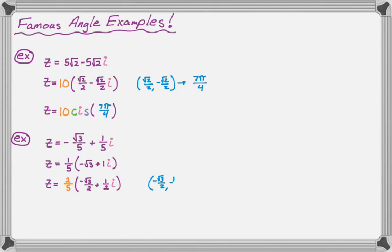So now I look for my unit circle point. Negative root three over two comma one half. I know that that is definitely five pi over six. And that means I can rewrite this. So we get two fifths cis five pi over six.